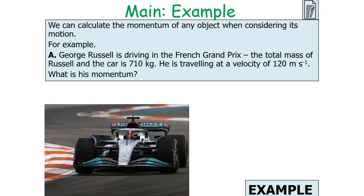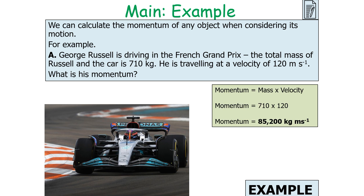Let's look at an example of calculating momentum. George Russell is driving in the French Grand Prix; the total mass of Russell and the car is 710 kilograms, and he is travelling at a velocity of 120 meters per second. What is his momentum? Momentum equals mass times velocity: 710 × 120 = 85,200 kilogram meters per second.